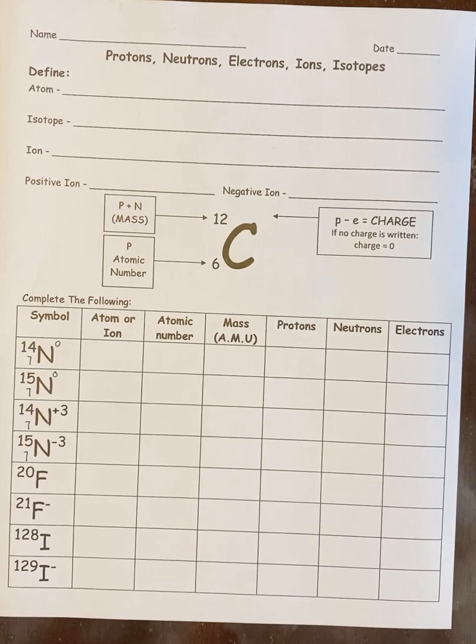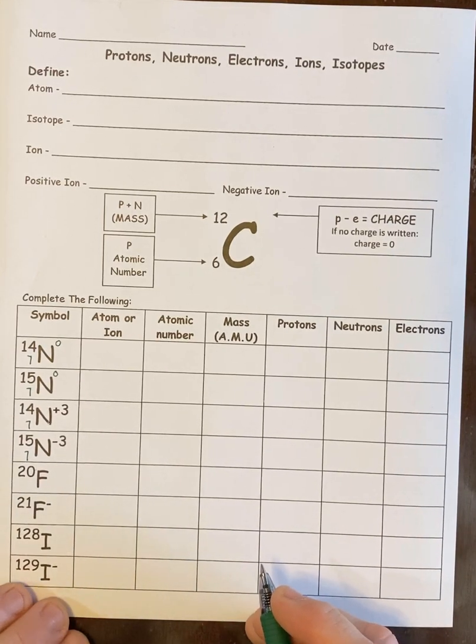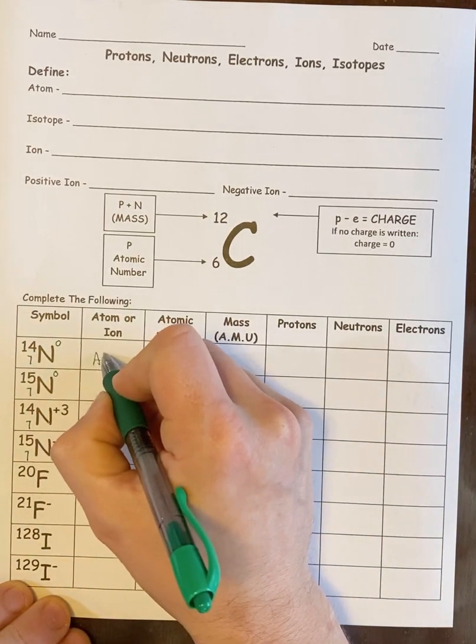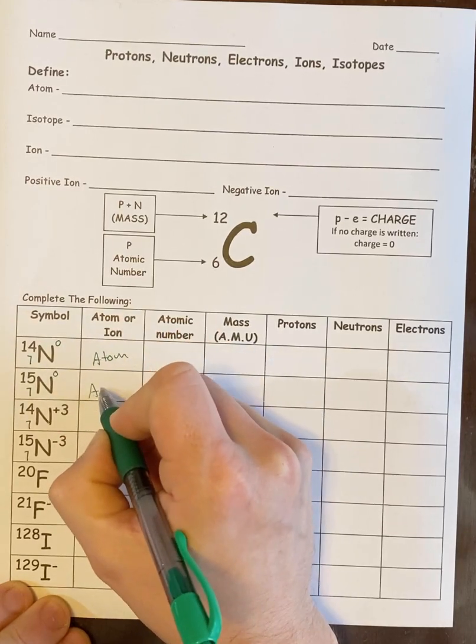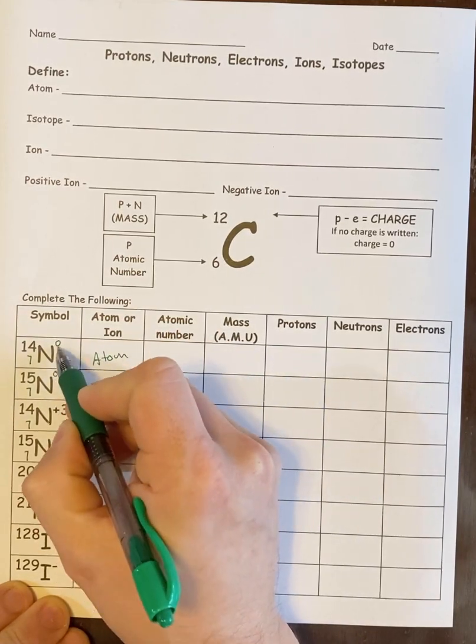So now I just have to figure out what they want. Atom or ion, well, that should be easy. Atom is anything with a neutral charge, and an ion is anything with charge. So these first two are atoms because they have no charge.